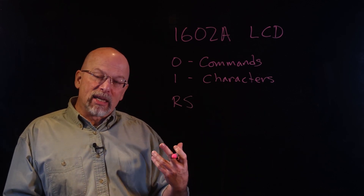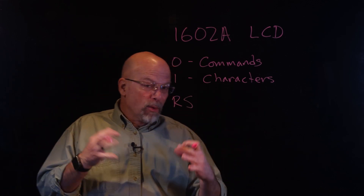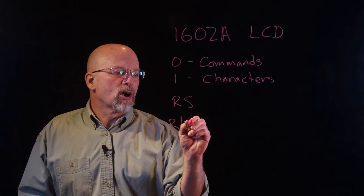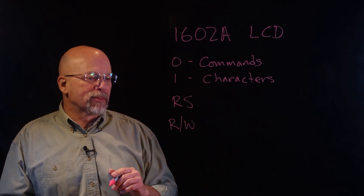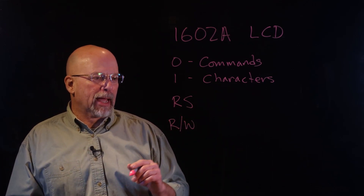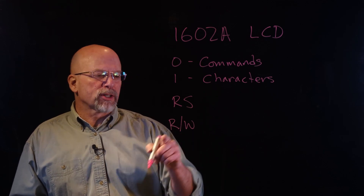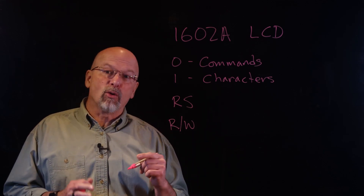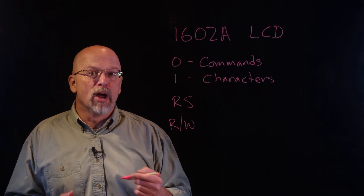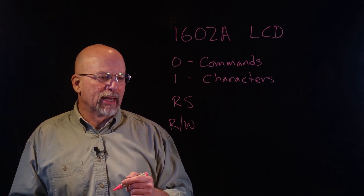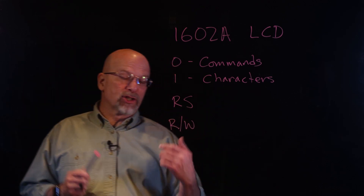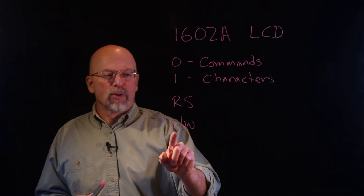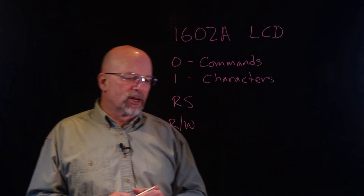We need one address line, which is actually called RS for register select. Now, if you're familiar with memory interfaces, you know about the read-write, RW-bar type signal. The way RW-bar works is that if it's equal to 1, we are reading; if it's equal to 0, we're writing. For our particular interface, all we're going to be doing is writing to the display, so this signal should always be a 0.